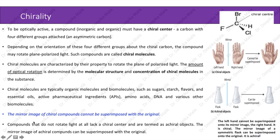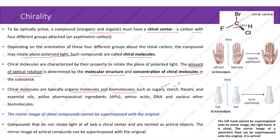To be optically active, a compound must have a chiral center — a carbon with four different groups attached, basically an asymmetric carbon. Depending on the orientation of these four groups about the chiral carbon, the compound may rotate plane polarized light. Chiral molecules are characterized by their ability to rotate the plane of polarized light. They are typically organic molecules and biomolecules such as sugars, starch, flavors, essential oils, active pharmaceutical ingredients, amino acids, DNA, and other various molecules. The mirror image of achiral compounds can be superimposed with the original.